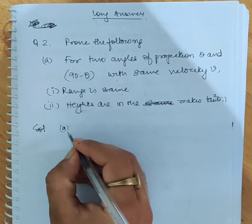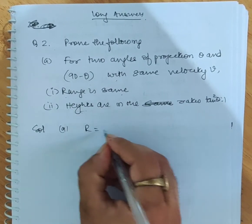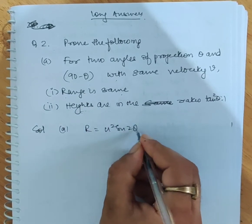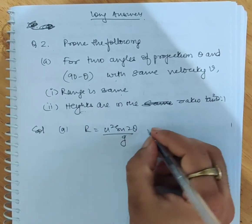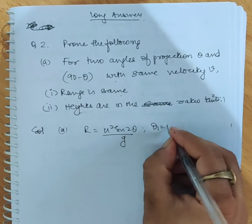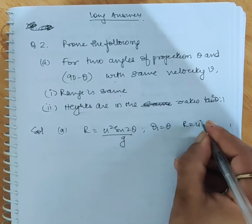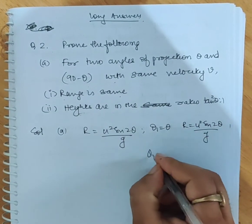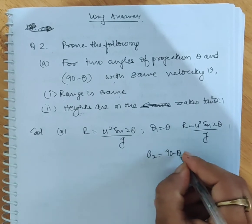Solution. (a) Range ka formula hai R = u²sin2θ/g. θ₁ equals θ; R = u²sin2θ/g. Aur baad mein θ₂ equals 90 minus θ rakhle.